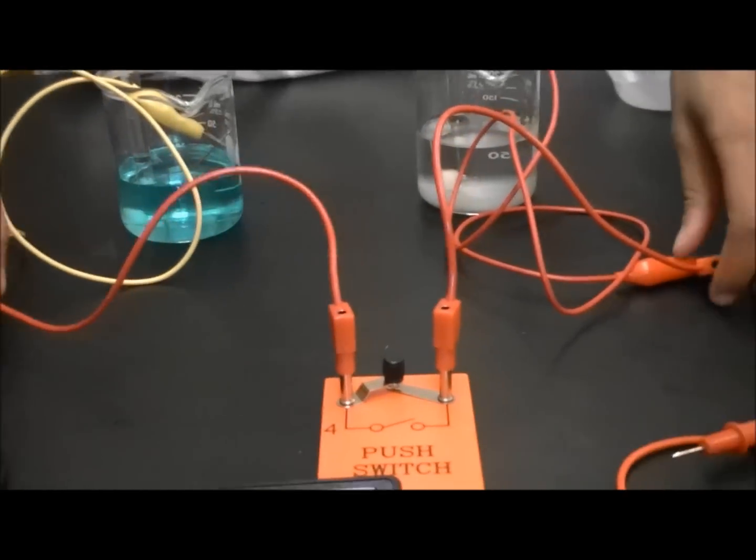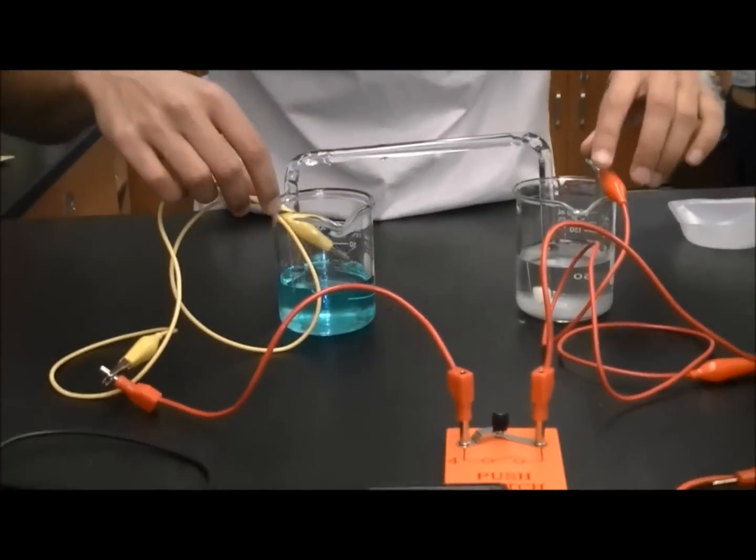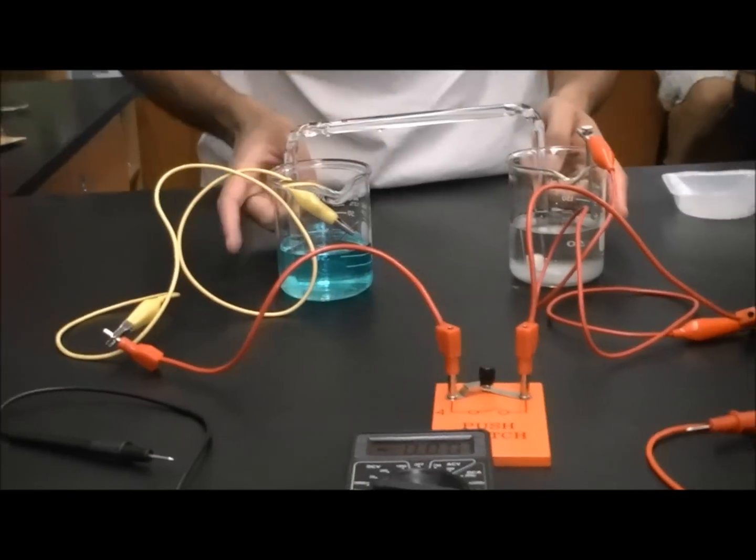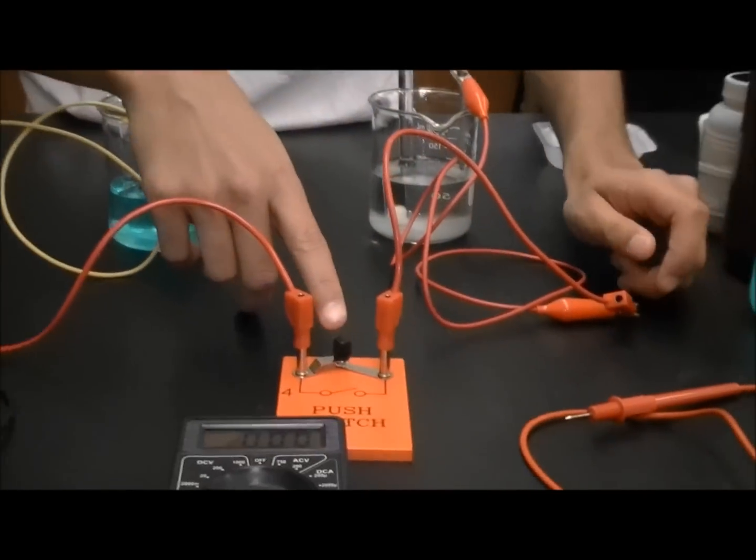Ok, so here we have our galvanic cell set up. Our cell bridges are here. Our electrodes are here and here. This is the anode, this is the cathode. Now, we have alligator clips attached to this, attached to the push switch right here.